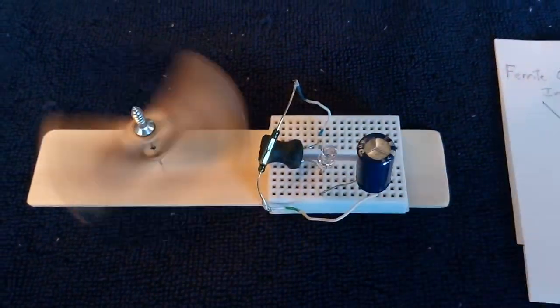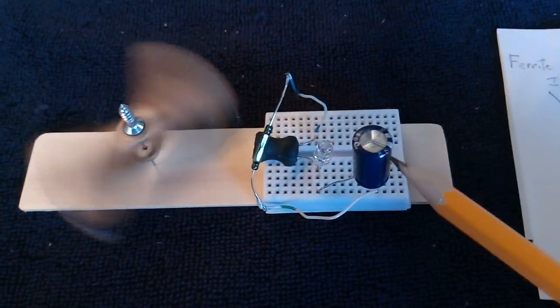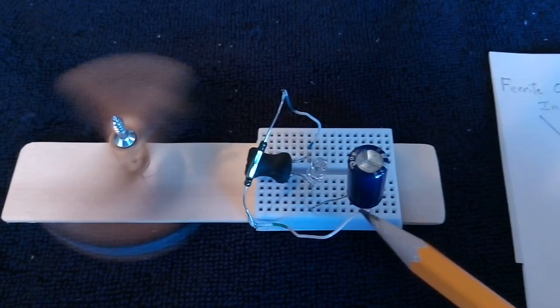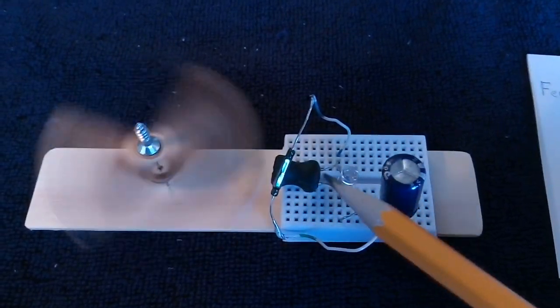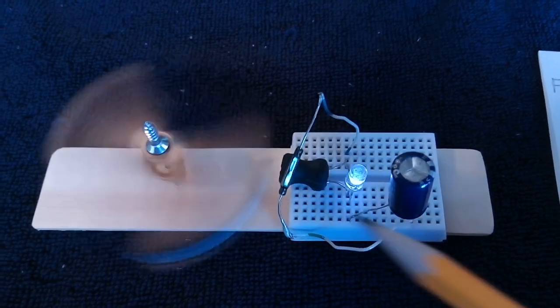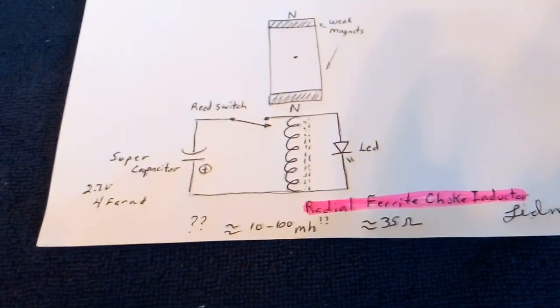And the super capacitor, just four farad at 2.7 volts, filled up with about two volts. LED across the inductor. The reed switch circuit looks like that.